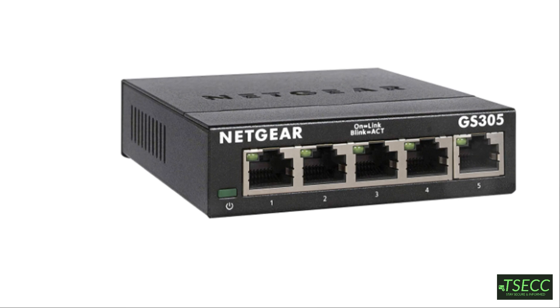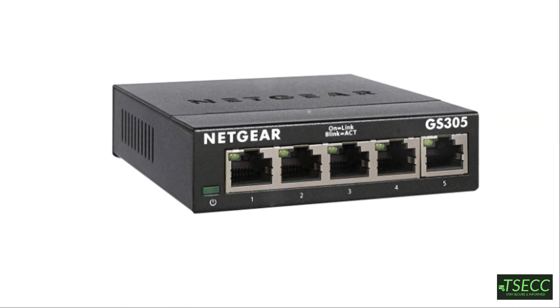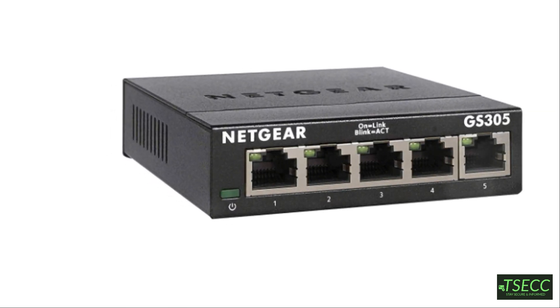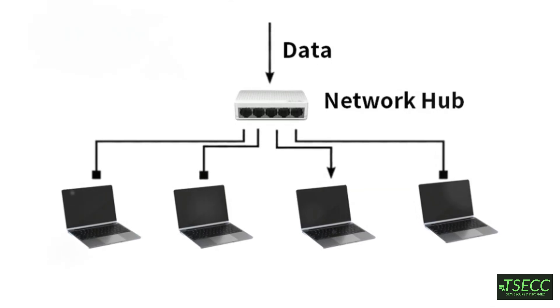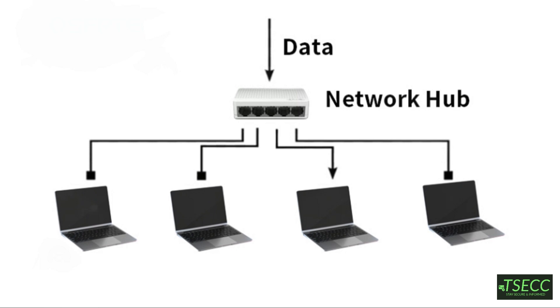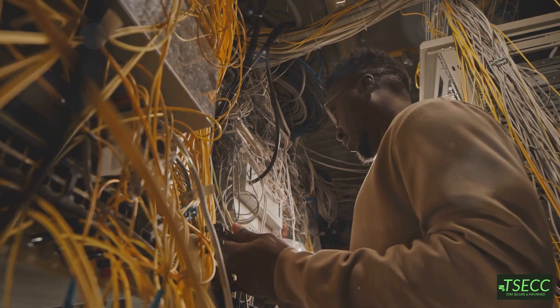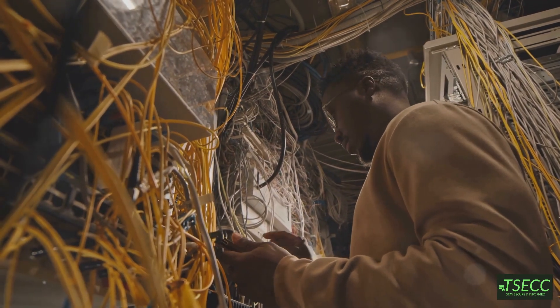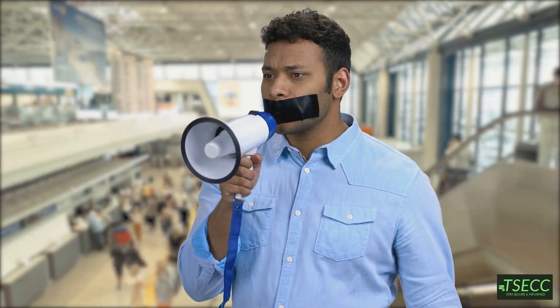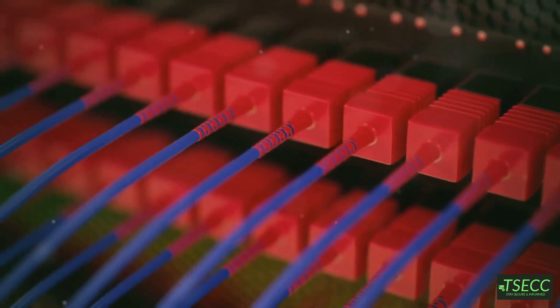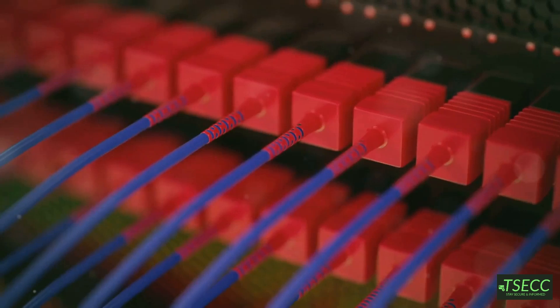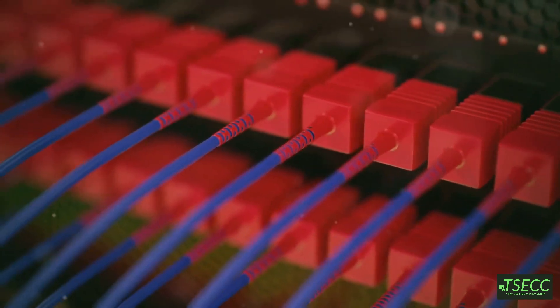First up, the hub. Hubs are kind of the OG when it comes to networking. You can think of a hub as a super basic device that connects a bunch of devices together on a network. But here's the kicker — hubs don't really know what they're doing. They're basically like someone shouting in a crowded room, hoping the right person hears. When you send data through a hub, it goes out to every single device on the network, whether they need it or not.